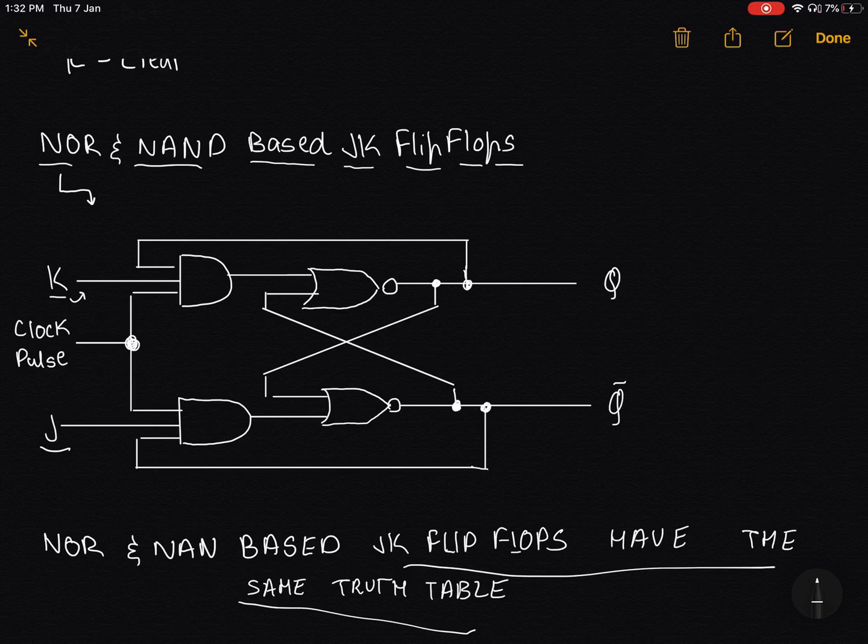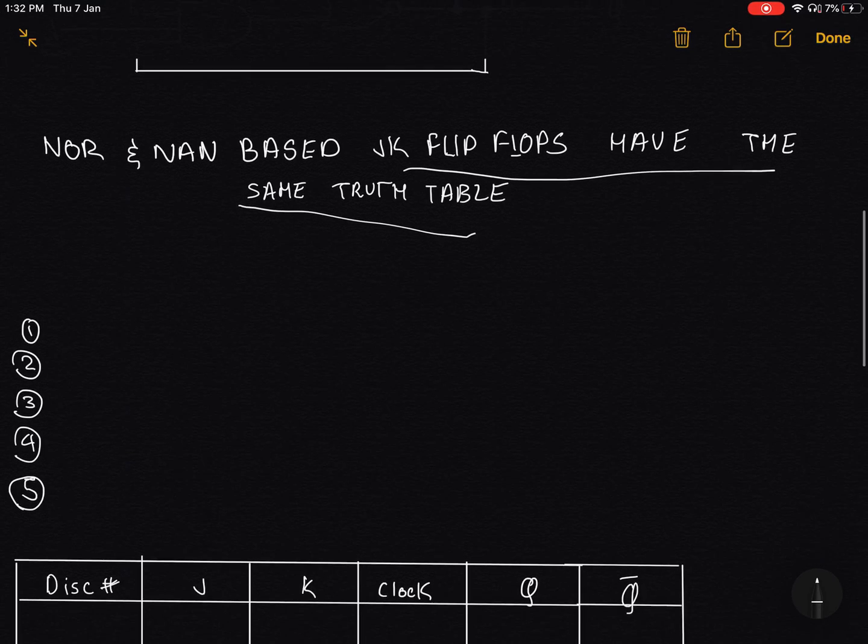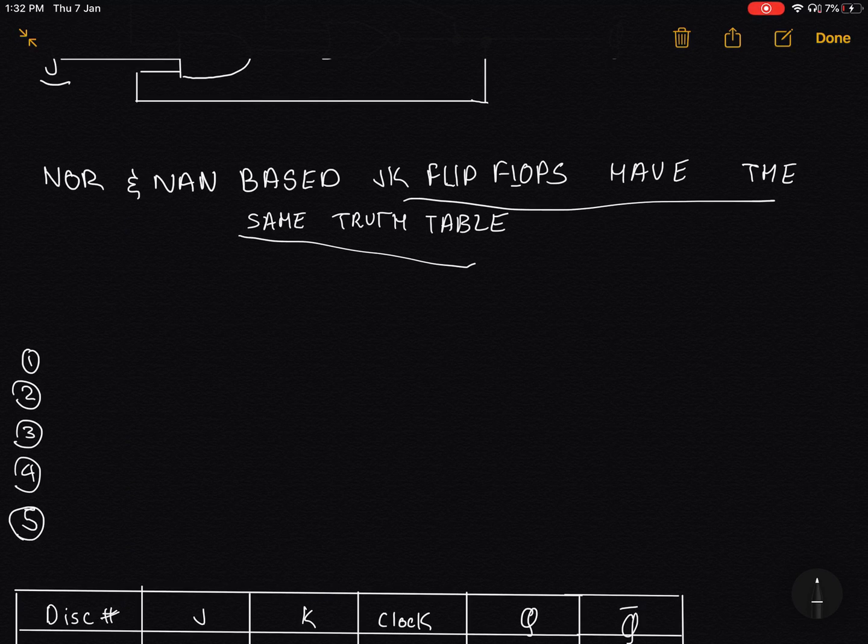It uses a clock pulse for synchronization and hence it allows for this. What you can see here is the diagram for a NOR based JK flip flop. Just go through it. You don't have to actually remember the whole diagram for CIE, but just go through it once so you understand what's going on.